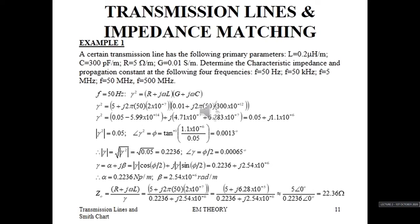Let's start with F at 50 Hz. We are given that gamma squared equals (R + jωL)(G + jωC). Inserting the values of R, L, C, and G with frequency F = 50 Hz and omega = 2π, we get the magnitude of gamma squared equal to 0.05, and the angle phi of gamma squared — whose tangent is the imaginary part over the real part — is 0.013 degrees.